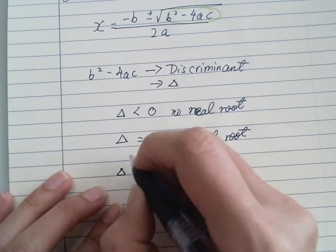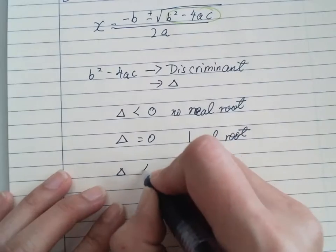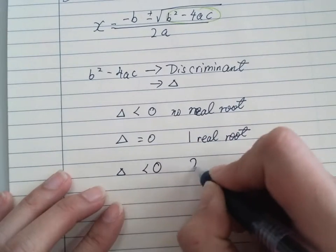And when it's bigger than 0, so it has a plus or minus, so you've got the case. So you have two real roots.